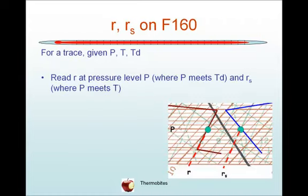On the F160, for a trace with a given pressure, temperature, and dewpoint temperature, the point where the isopleth of mixing ratio crosses the dewpoint profile gives you the mixing ratio for that given pressure, and the point where the isopleth of mixing ratio crosses the temperature line, that gives you the saturation mixing ratio.